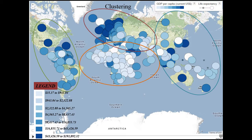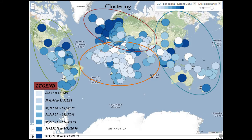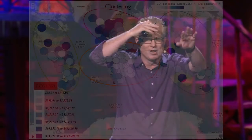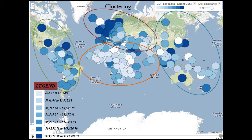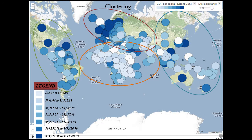I took some data on GDP per capita and life expectancy and mapped it on a map of the earth. You can see I clustered the regions together — the Americas, Africa, Europe, and Asia. Darker red indicates a higher GDP per capita, and light blue indicates a lower GDP per capita. You can see that on the graph, and there's a legend down below.